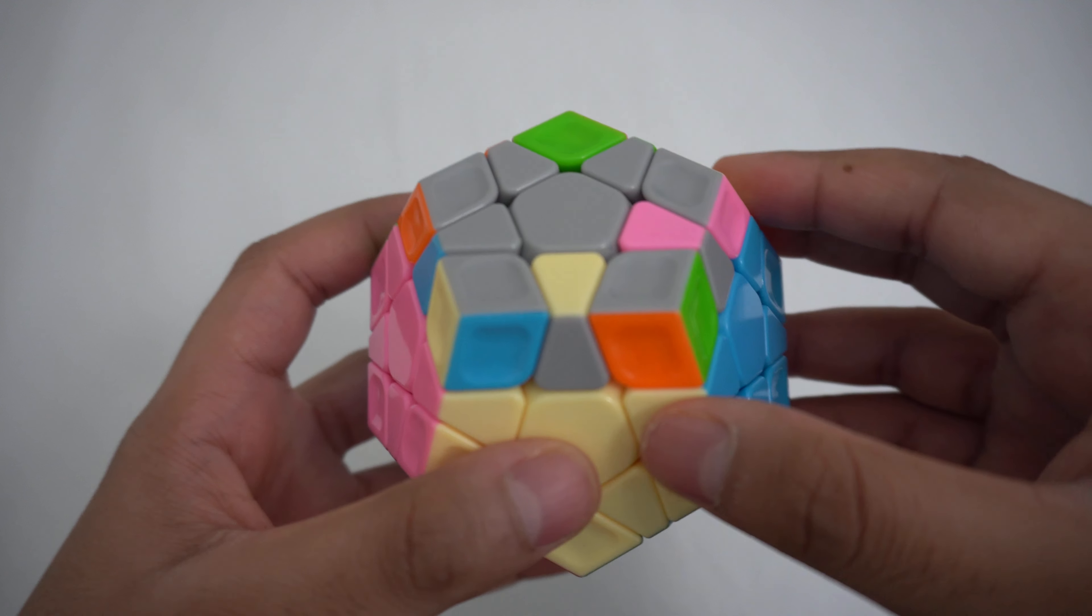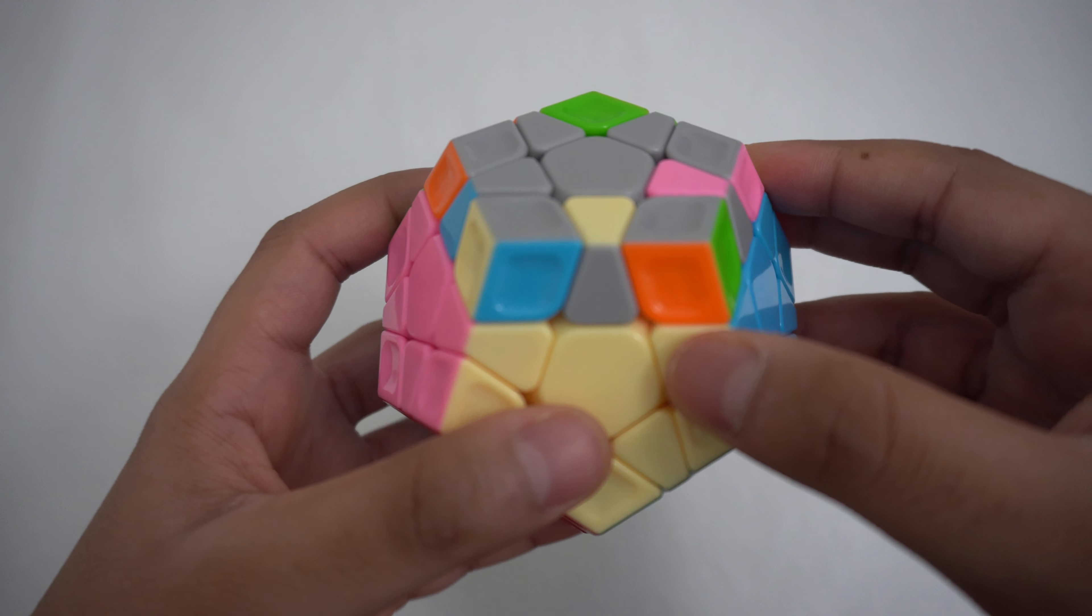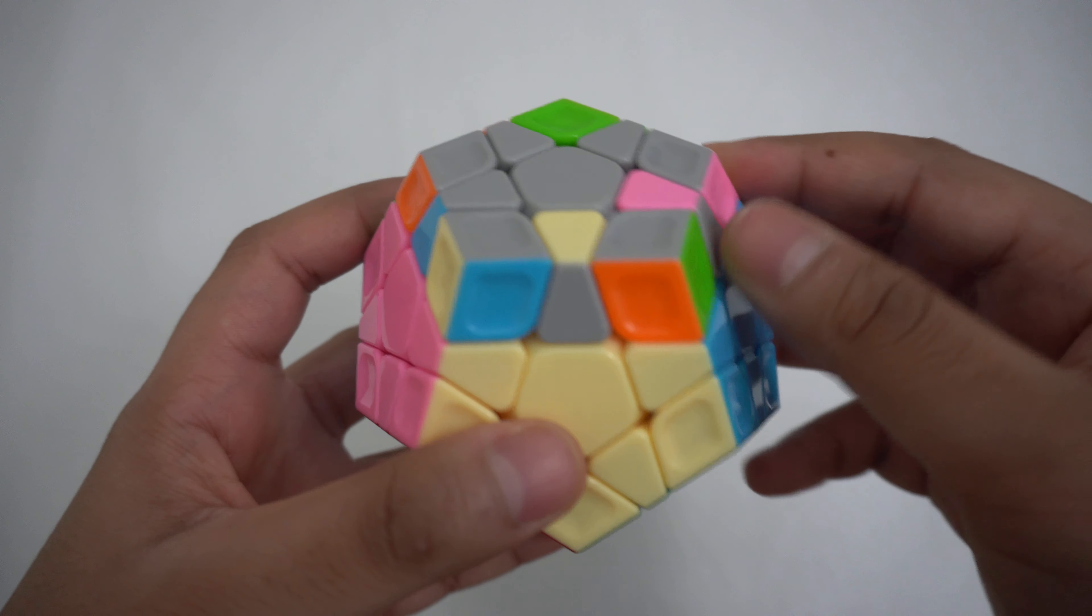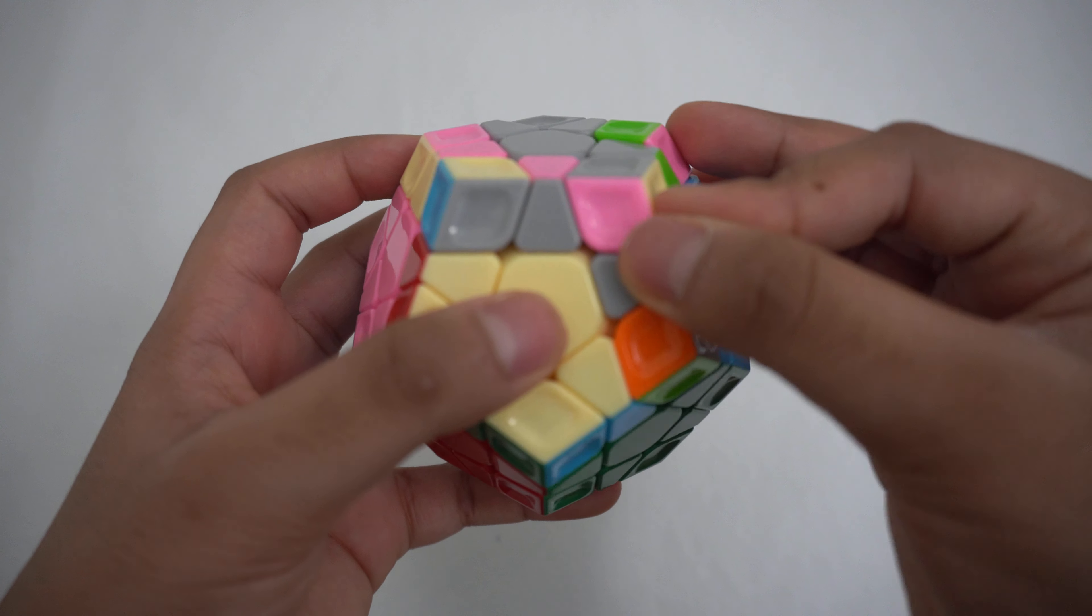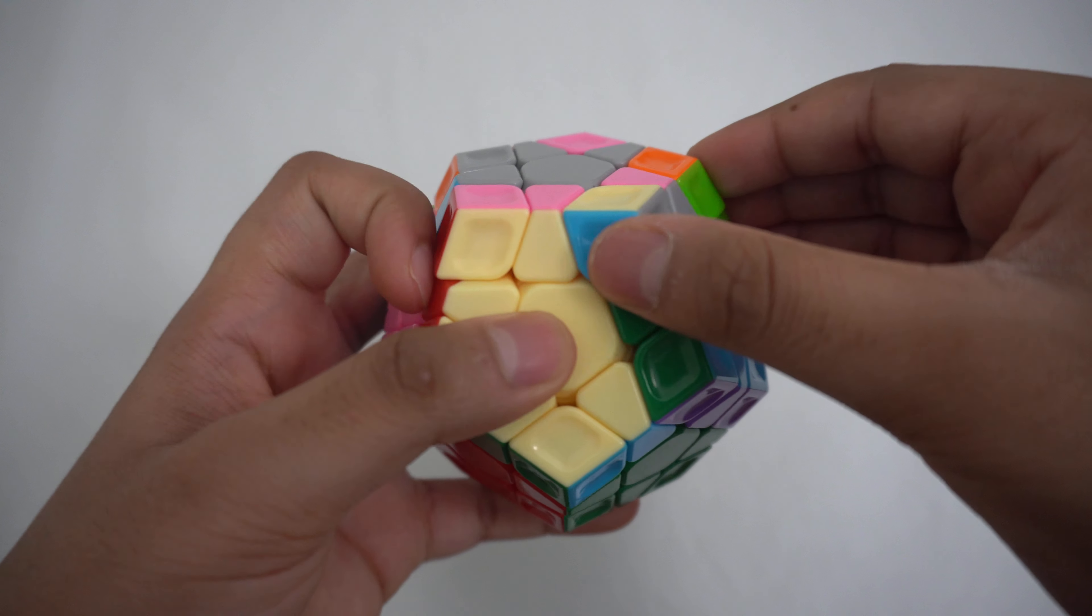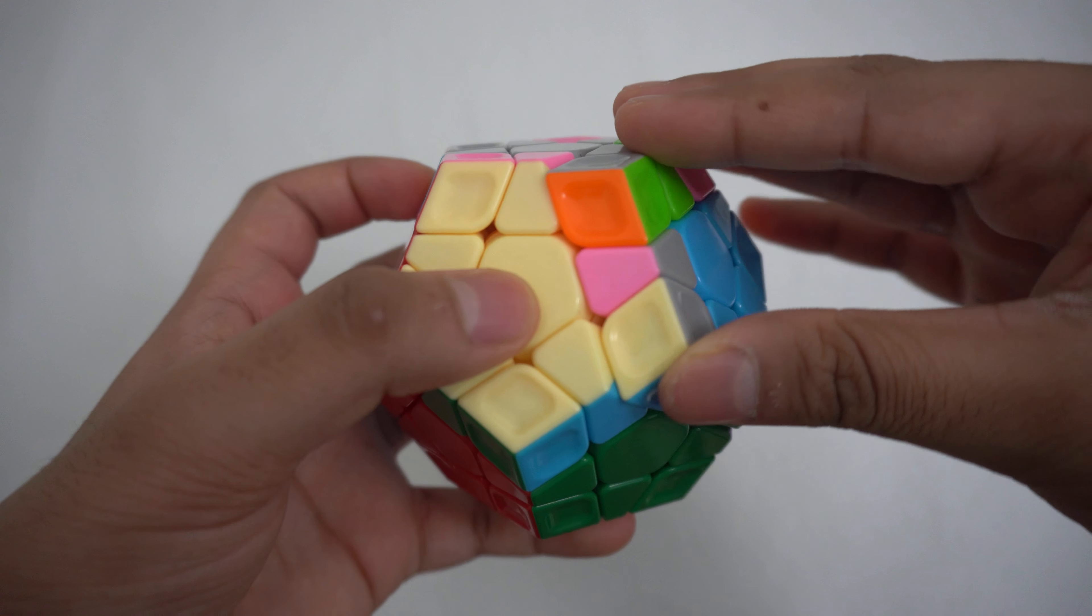If you have two edge pieces that you need to flip and those pieces are right next to each other, then hold them in the front and right and do this algorithm. F, R, U, U prime, R prime, F prime.